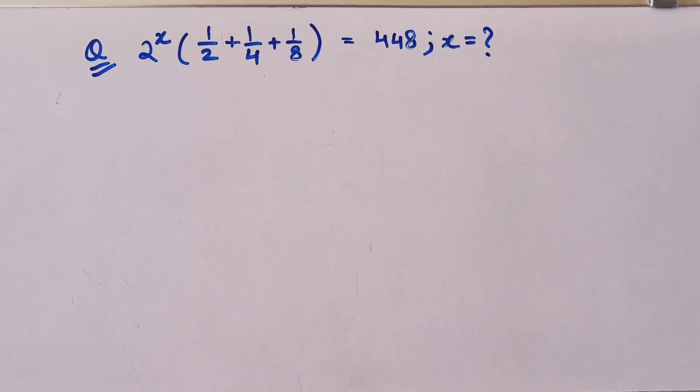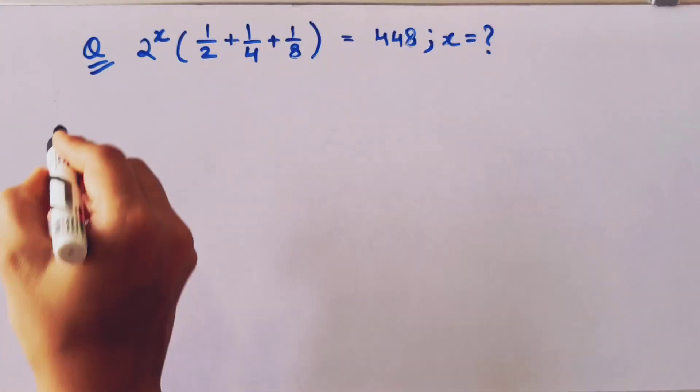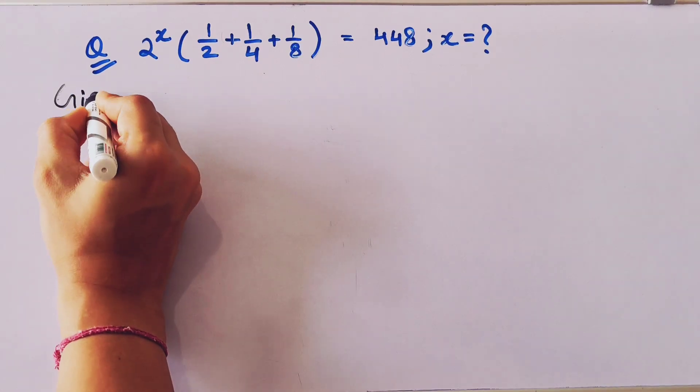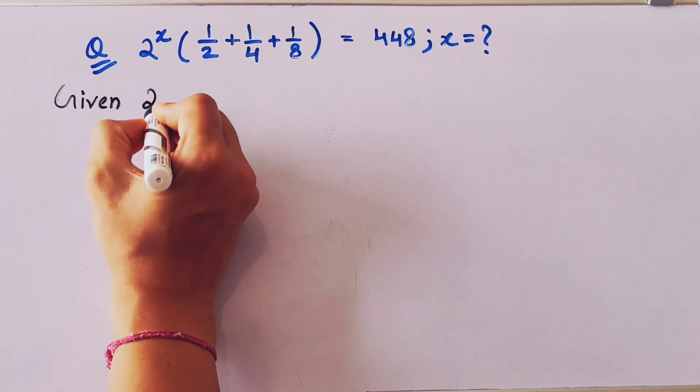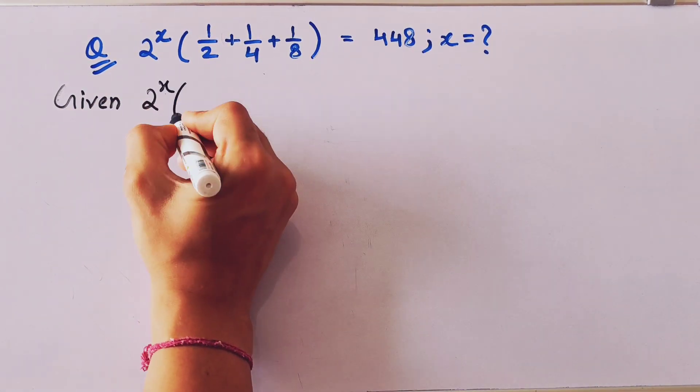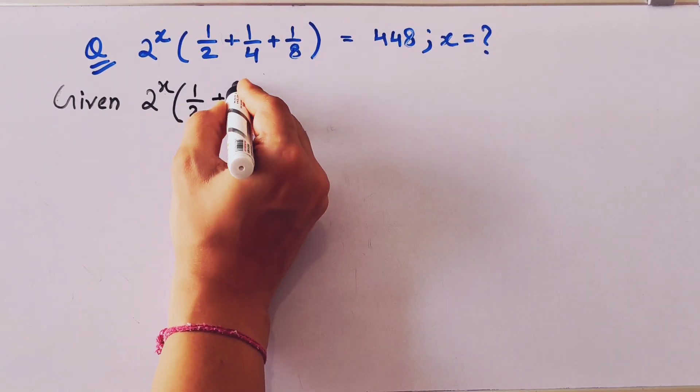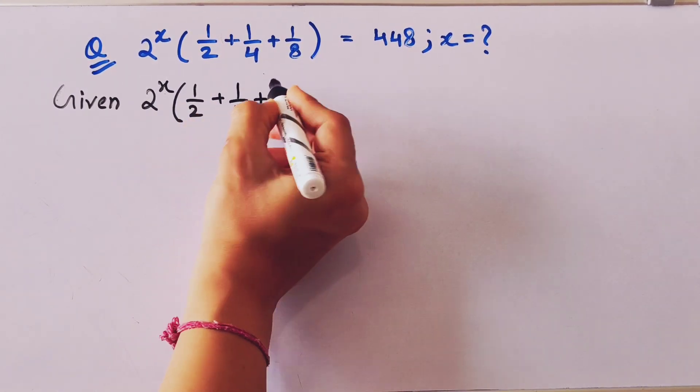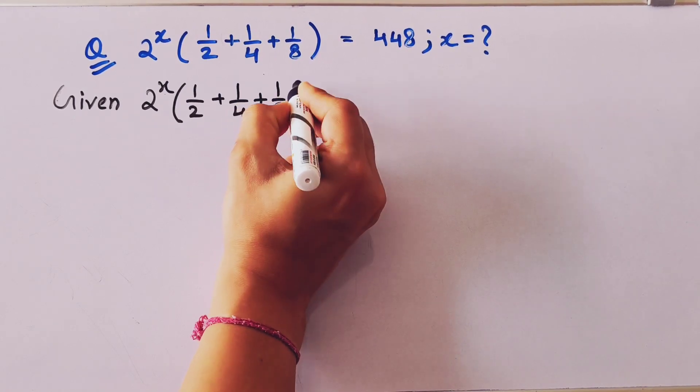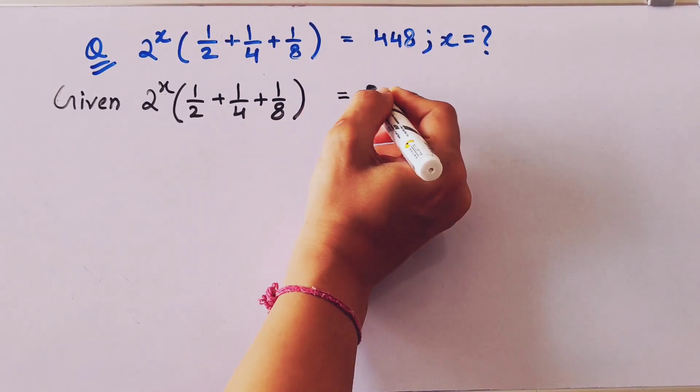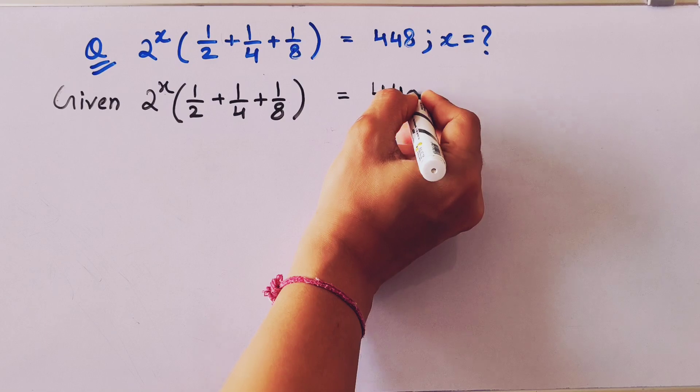Let's solve another exponent problem. I will show you a very easy and simple way to solve this question. First, we'll write given, so we have given 2 to the power x times 1 divided by 2 plus 1 divided by 4 plus 1 divided by 8, bracket close, equal to 448.